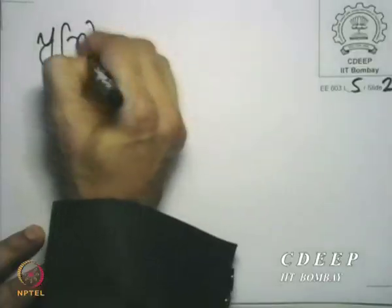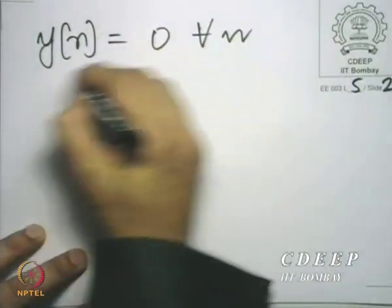When the input is δ[n], what output do we expect from y[n] = n·x[n]? At n=0, the input is 1 but it gets multiplied by 0. Everywhere else, the input itself is 0. So y[n] = 0 for all n when x[n] = δ[n].